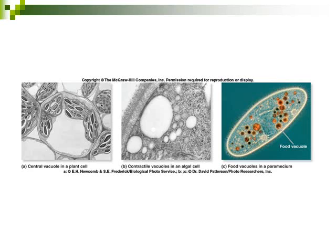This slide shows different types of vacuoles. On the left, we have a central vacuole in a plant cell that helps to provide support. In the middle, we have a contractile vacuole that fills up with water and then contracts to push the water back out of the cell. The third type — food vacuoles — can break down food or break down bacteria that have invaded the body.